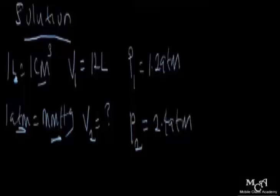If the pressure increases to 2.4 atmosphere, that is the final pressure P2 = 2.4 atmosphere. Notice there is no temperature given here — the temperature is constant. Having brought out your parameters, what should pop in your mind is that Boyle's Law is coming into play here.